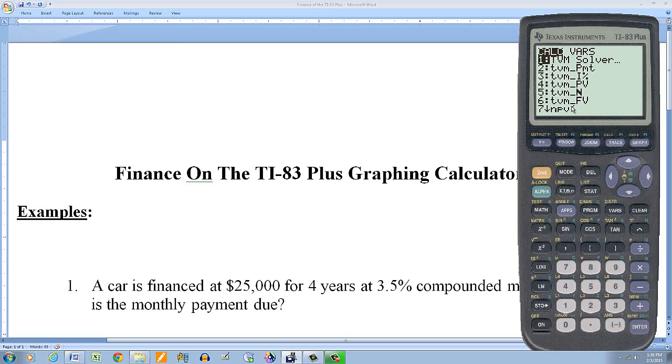And there's several things I can use there, but the main one I want to use is the TVM solver. So I hit enter. And then with this I can find present value, I can find future value, I can find the amount of a payment, which is what I want in this particular case. So I fill in all the appropriate values here, except the one I'm looking for. So I'm looking for payment, which would be PMT here.